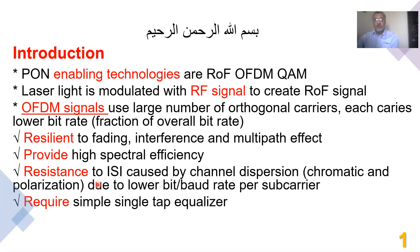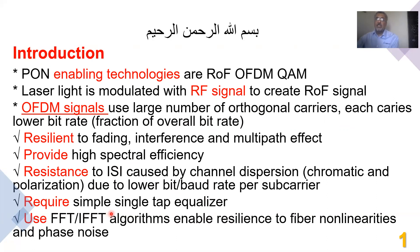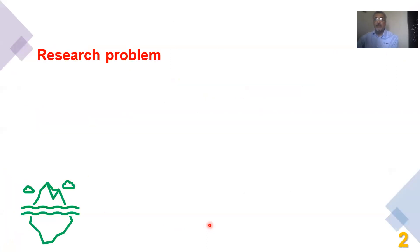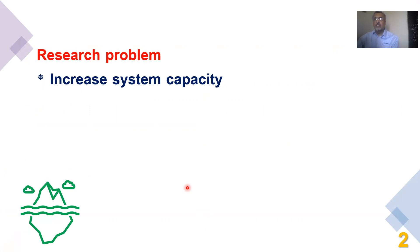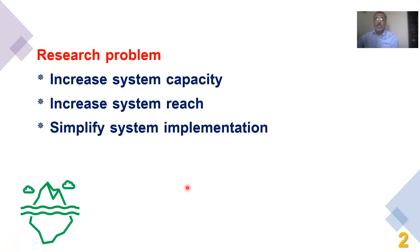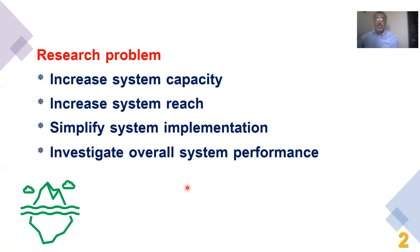OFDM signals also require very simple single-tap equalizers. Using fast Fourier transform and inverse fast Fourier transform algorithms enables resilience to fiber nonlinearity like self-phase modulation as well as phase noise in the system. In this work, what we are trying to do is increase the system capacity, increase the system reach, and simplify the system compared to other published work, and then investigate the overall system performance.